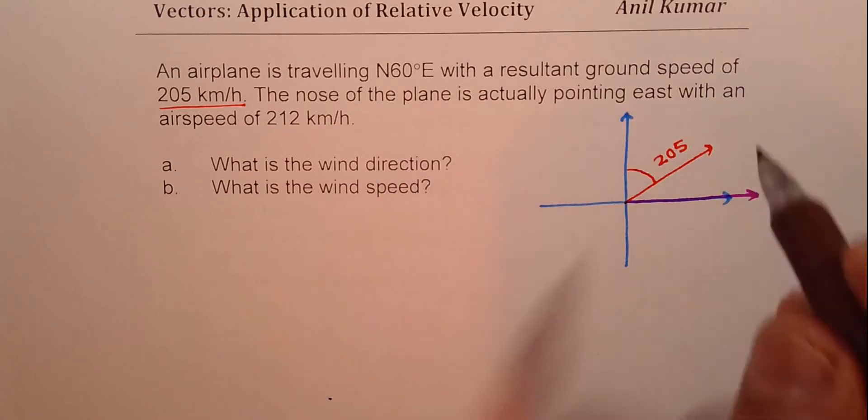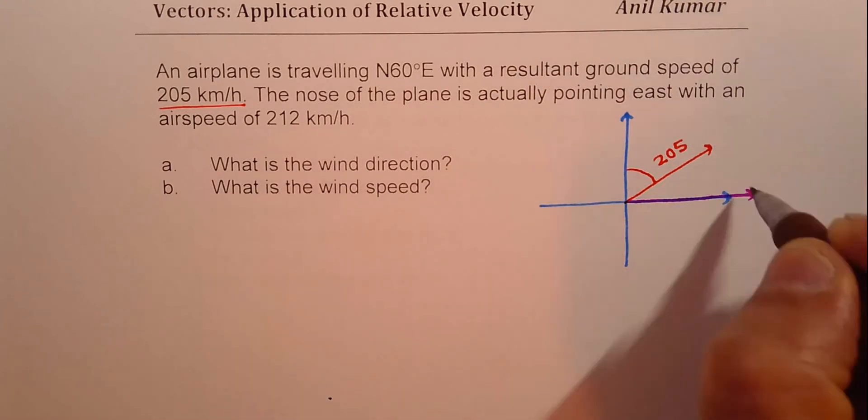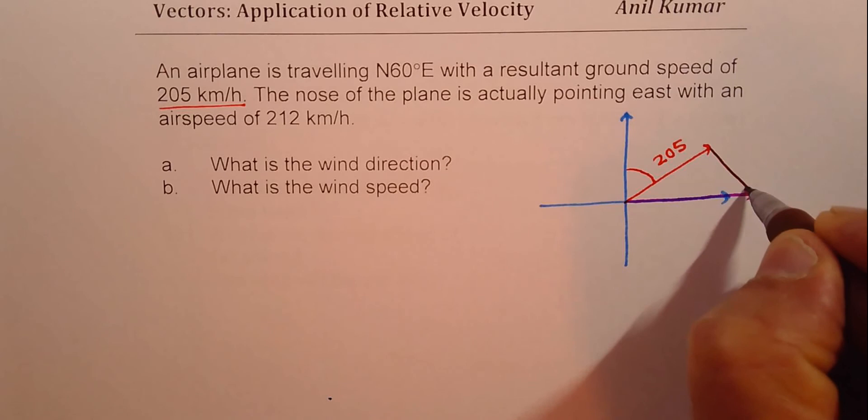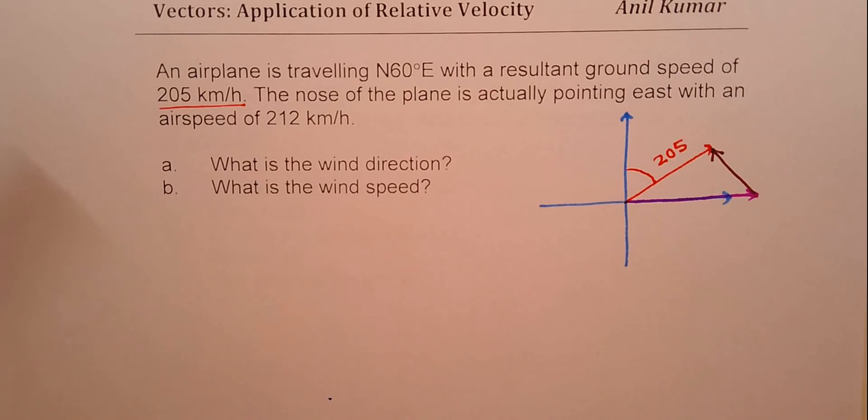And that is because of the wind, right? So it says what is the wind direction? So wind direction is something like this. Now, I hope the diagram is clear. That is called the vector diagram.